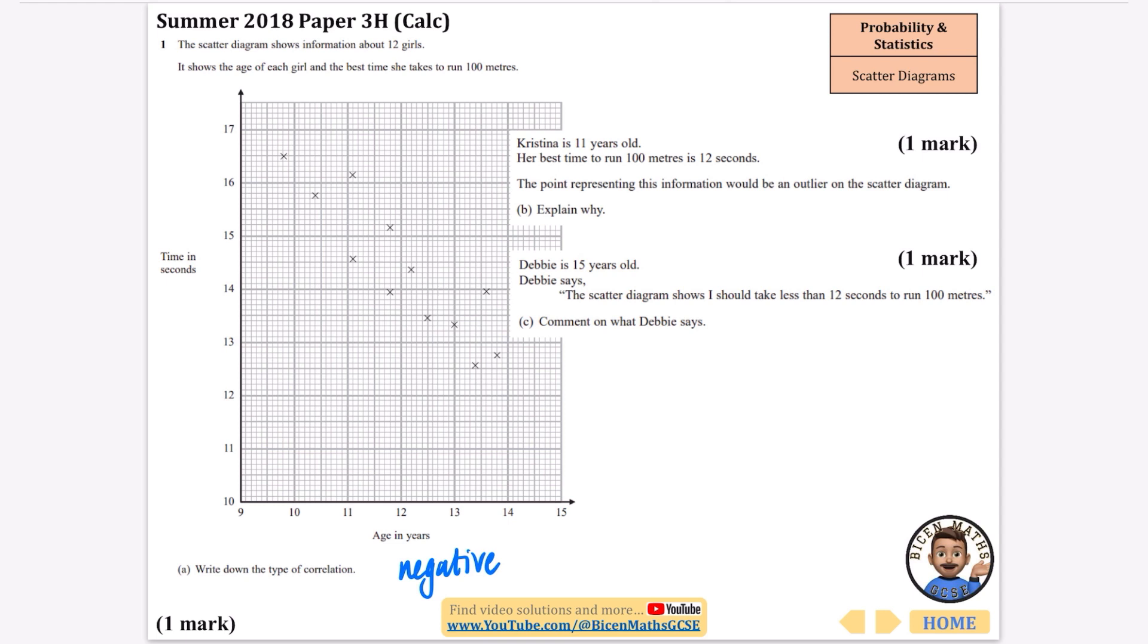Christina is 11 years old. Her best time to run is 12 seconds. The point representing this information would be an outlier on the scatter diagram. Explain why. She's 11 and it would be down here. She's far away from the other points. I'm going to say the point would be an outlier because it would be far from the other points. Maybe she goes to athletics club or something.